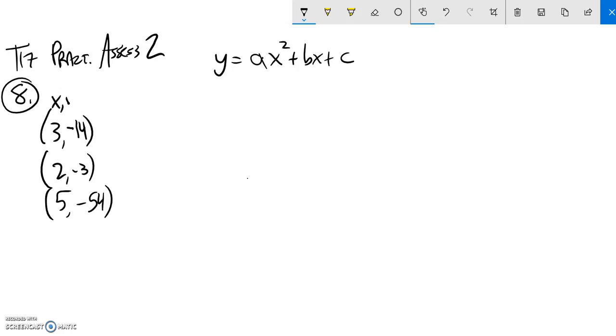So I know that these points come in the form x, y. I'm just going to plug them into this equation. So when y is negative 14, x is 3. So that's a times 3 squared plus b times 3 plus c.